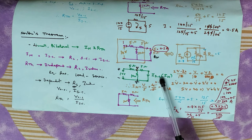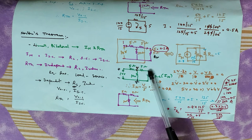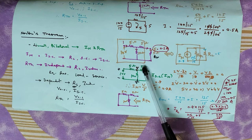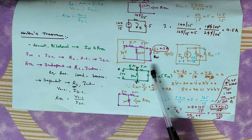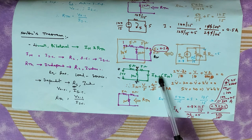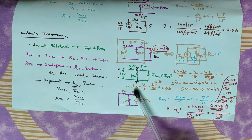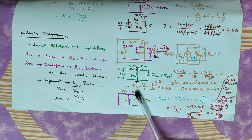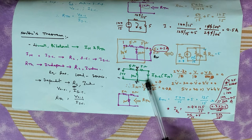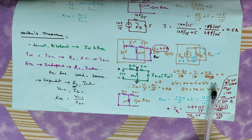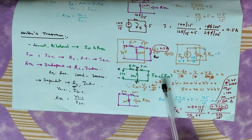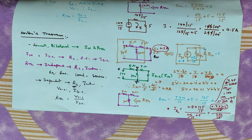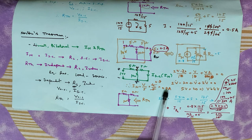So ISC equals 10. The current passing through this branch is V divided by 5. Therefore, ISC is equal to V divided by 5, which is 4 divided by 5, giving ISC equal to 0.8 A.